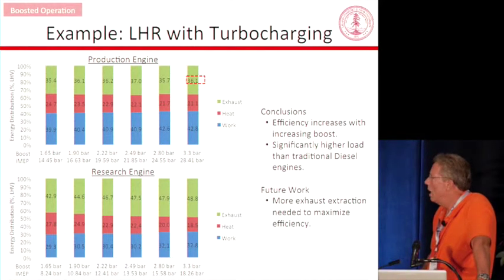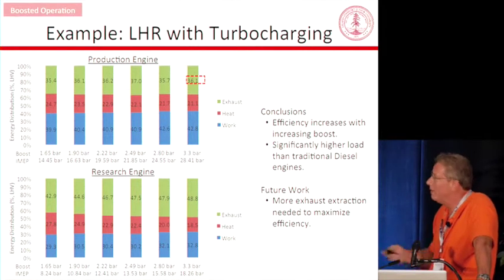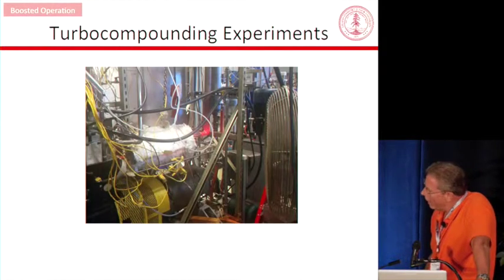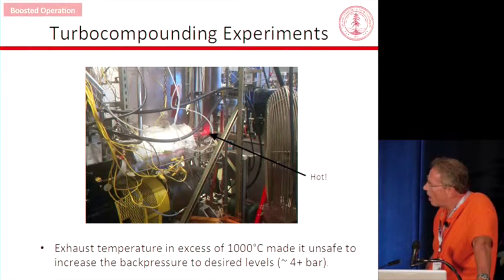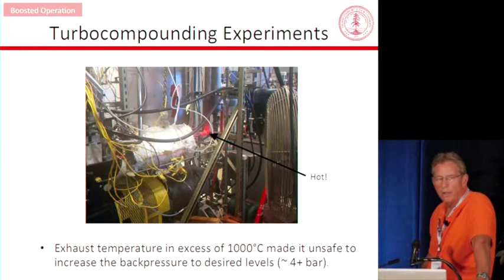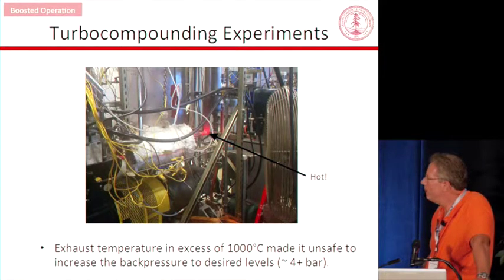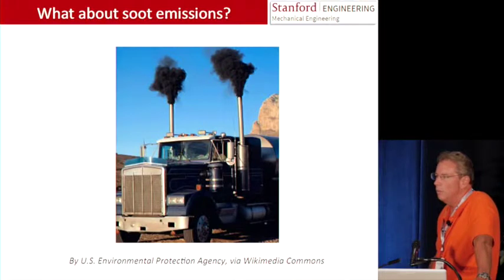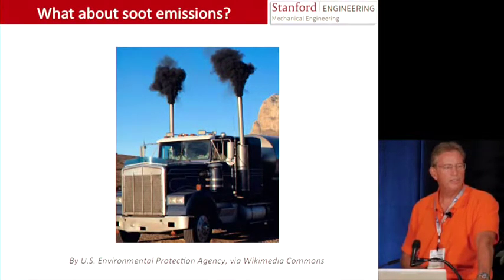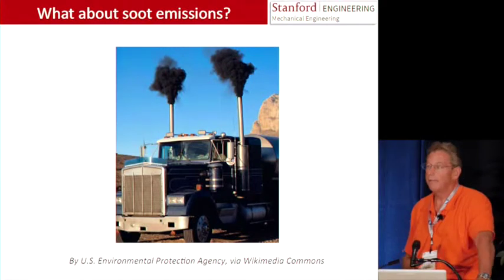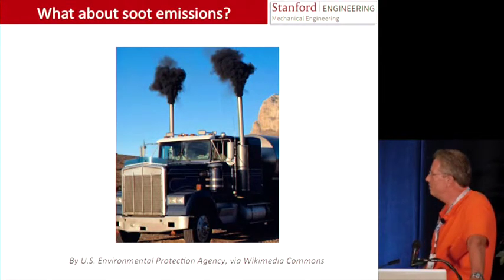We need to do more extraction work — turbocharging is just the minimum. With turbo compounding, when you have significant enthalpy flows coming out the back, as one graduate student pointed out: it gets hot, and when it's at four or five bar and made of mild steel it starts to creep — you have to be careful. But we learned what we needed. Now, what about soot? When I say diesel, that's probably the first thing you think of. Here's a lovely graphic of some terrible soot.